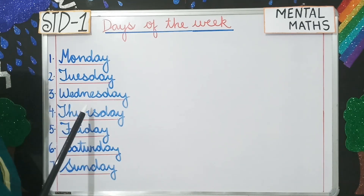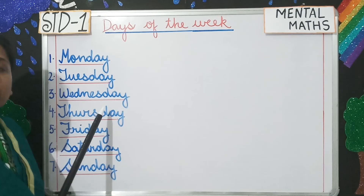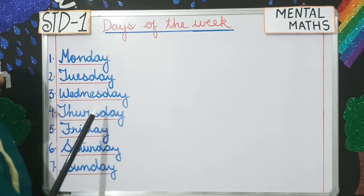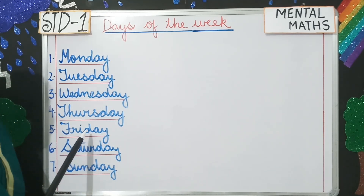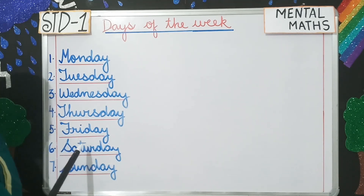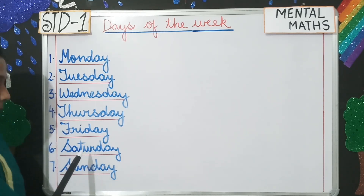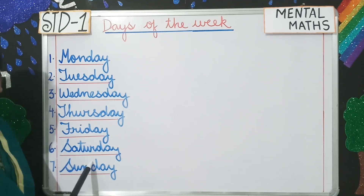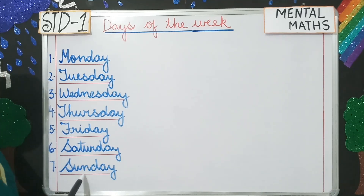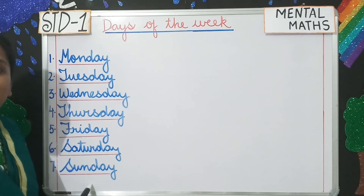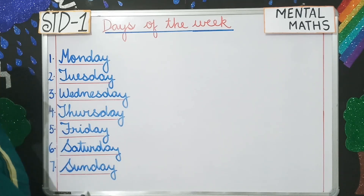Then we have Wednesday. Wednesday is the third day of the week. Thursday is the fourth day of the week. Then we have Friday. Friday is the fifth day of the week. Saturday is the sixth day of the week. And then we have Sunday — with this the week ends. Sunday is the seventh day of the week.